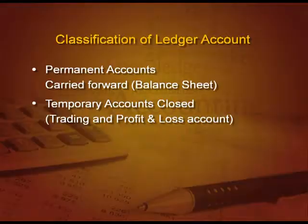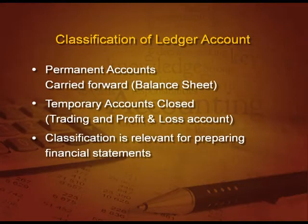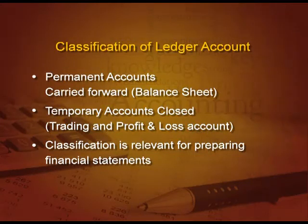Now all these things — trading account, profit and loss, and balance sheet — will come in the chapters to come, so right now we are just trying to tell you where they are going. This classification is relevant for preparing financial statements. We prepare trading account to get gross profit, profit and loss account to get net profit, and balance sheet to get assets and liabilities and the position of the company as at a particular date.